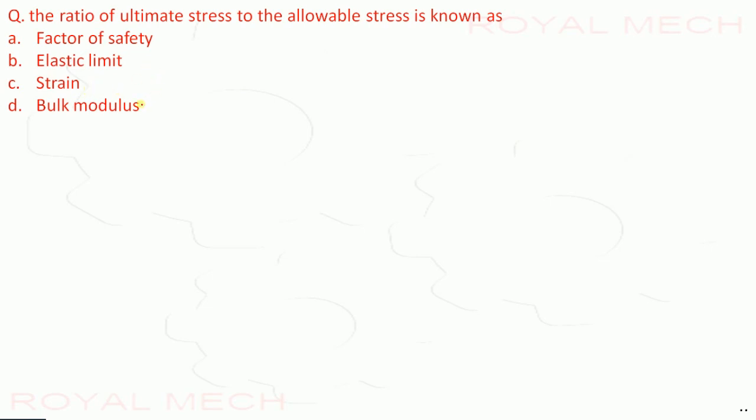The ratio of ultimate stress to the allowable stress is known as factor of safety. Elastic limit is the limit when stress is directly proportional to strain. Strain is change in length to the original length.